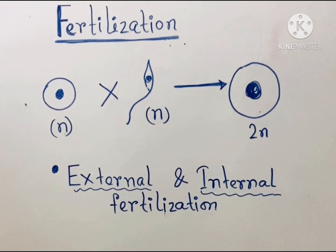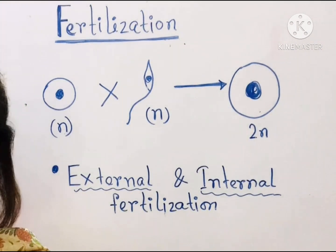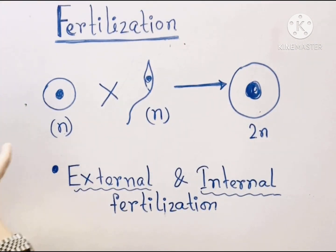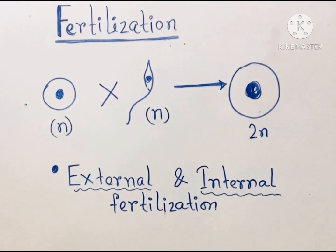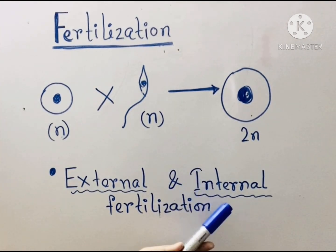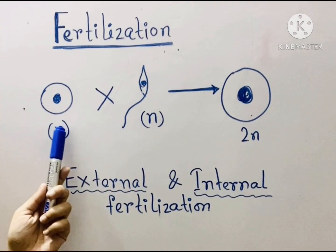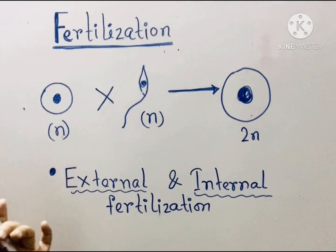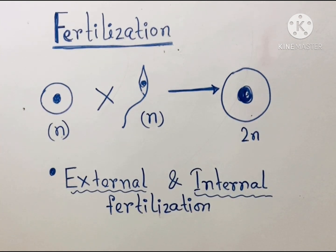What is external fertilization? External fertilization means the gametes unite outside the body, not inside the body. And what is internal fertilization? Internal fertilization is the fertilization where the sperm travels to the ovum inside the female reproductive system of animals and fertilization occurs inside the body of the female animal.